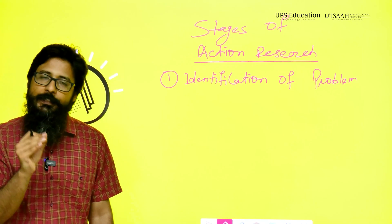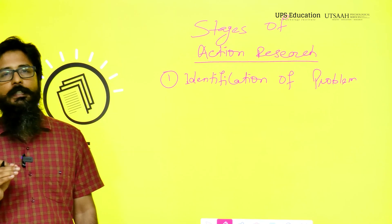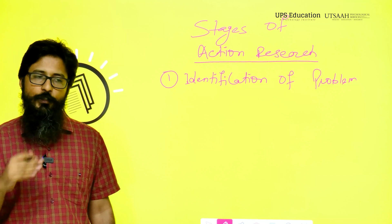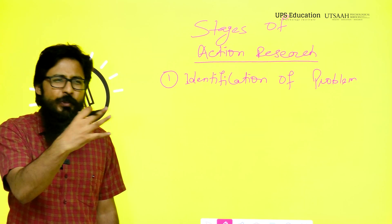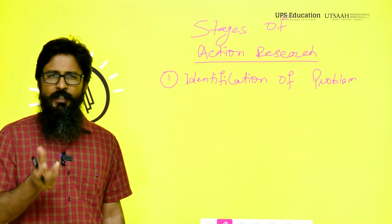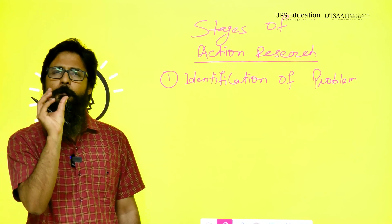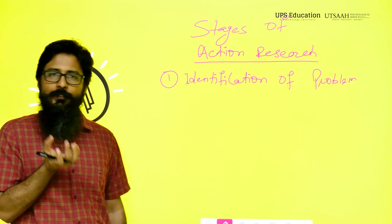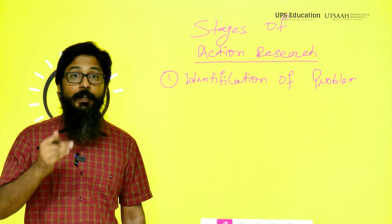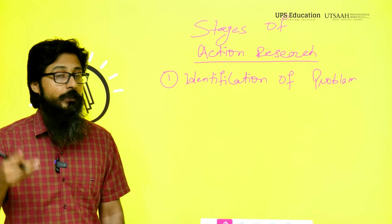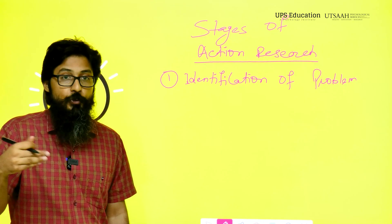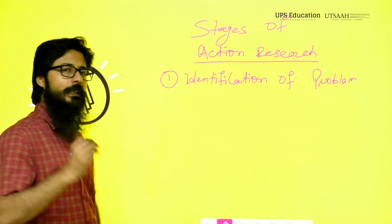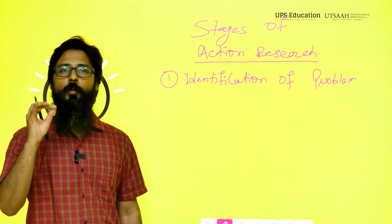For example, a teacher might notice that students are not very engaged in the class — they are teaching, but students are not much engaged. So this is the problem the teacher is identifying. This is identification of the problem. Now the teacher has a problem and will try to solve it — all those processes will follow.